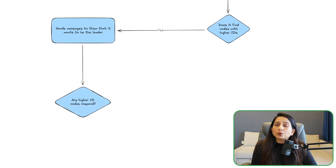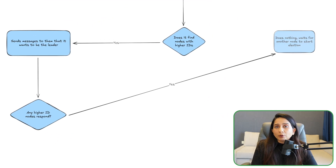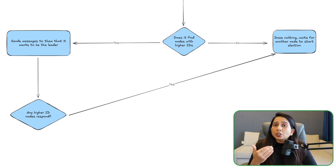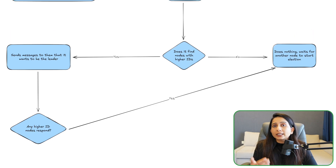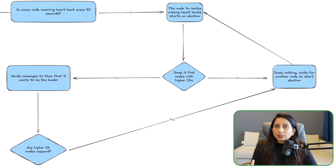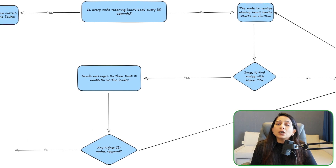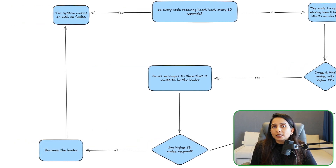If any higher-ID node responds that it is available, the initiating node drops out of the election. The higher-ID node then restarts the election by sending messages to nodes with even higher IDs. Eventually the node with the highest ID ends up becoming the leader. This is the crux and core of the Bully Algorithm.